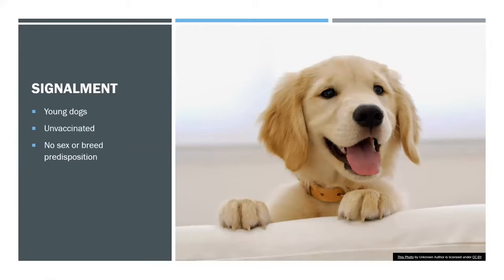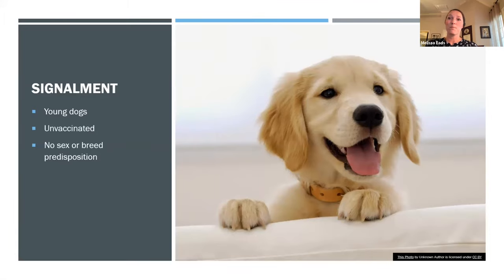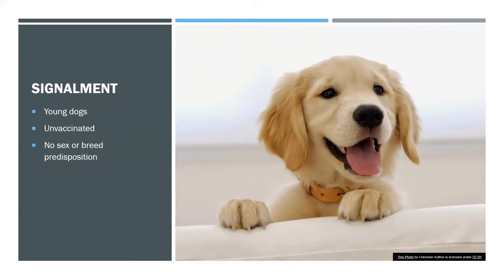Typically it's going to be a young dog that's never been vaccinated or not appropriately vaccinated. There's no difference between male or female, and no specific breed is more affected — mostly young dogs, probably because their immune system is still developing. An older dog likely had distemper at some point, cleared it, and already has that immunity from having the disease before.